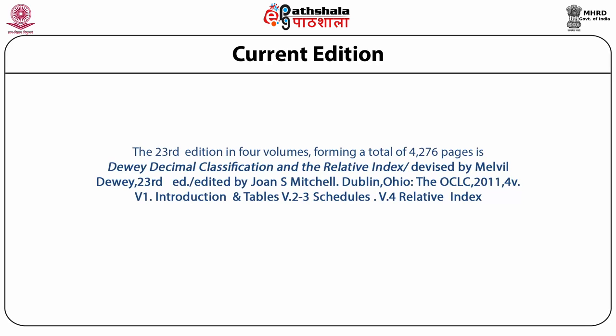Its bibliographical details are as follows. The title is Dewey Decimal Classification and Relative Index, devised by Melvil Dewey. The 23rd edition was edited by Joan S. Mitchell. The publisher is OCLC, Dublin, Ohio, in the year 2011, in four volumes. Volume 1 is Introduction and Operation Manual with six tables. Volumes 2 and 3 contain the schedules. Volume 4 is devoted to the relative index.